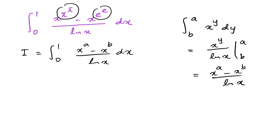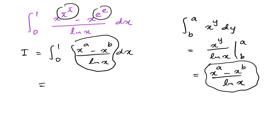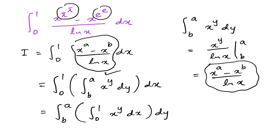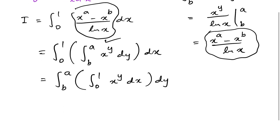We have x^a minus x^b over natural log of x — the same function as in our integral. So we can write I as the integral from 0 to 1 of the integral from b to a of x^y dy, dx. Now we can interchange the order of integration: integral from b to a of the integral from 0 to 1 of x^y dx, dy.